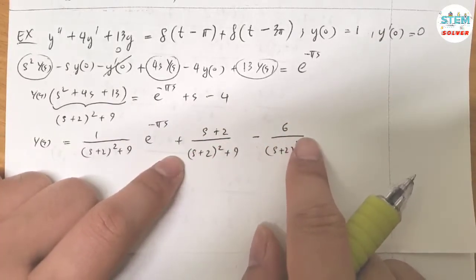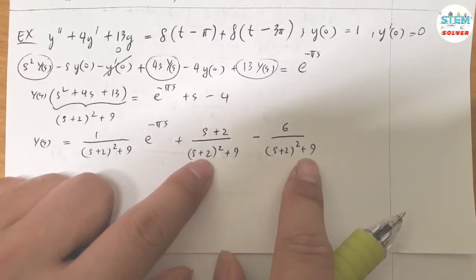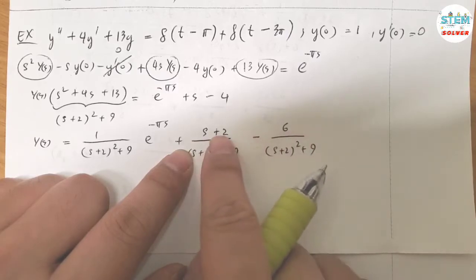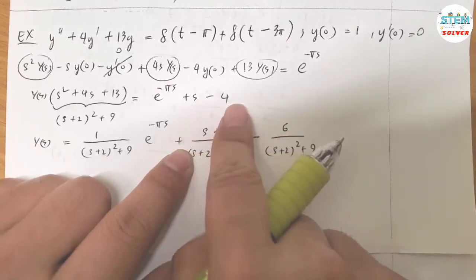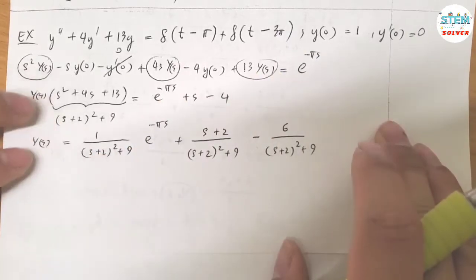Minus 6 over S plus 2 squared plus 9, so I have S plus 2 minus 6 here. The denominator is the same, right? So you combine the top together, which gives you S plus 2 minus 6, so 2 minus 6 is negative 4. So S minus negative 4, right? And this is what I already have here, so it doesn't change anything.